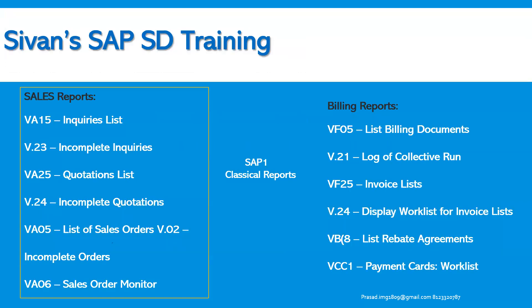Sales reports: we can see reports like VA15 inquiries list, VA23 incomplete inquiries, VA25 quotations list, VA24 incomplete quotations, VA05 list of sales orders, VA02 incomplete orders, and VA06 sales order monitor.